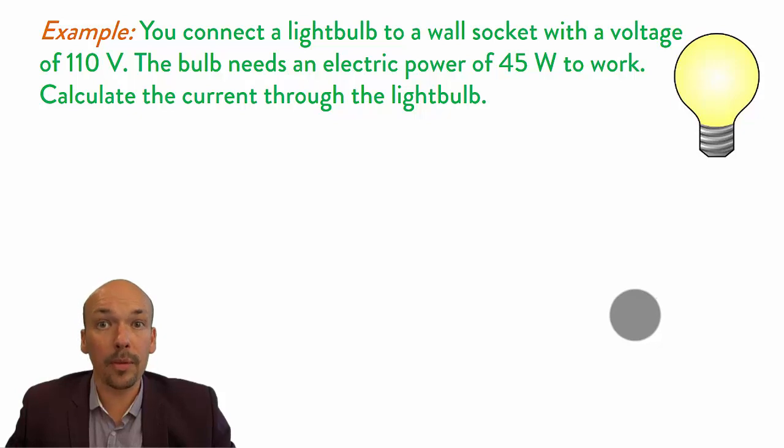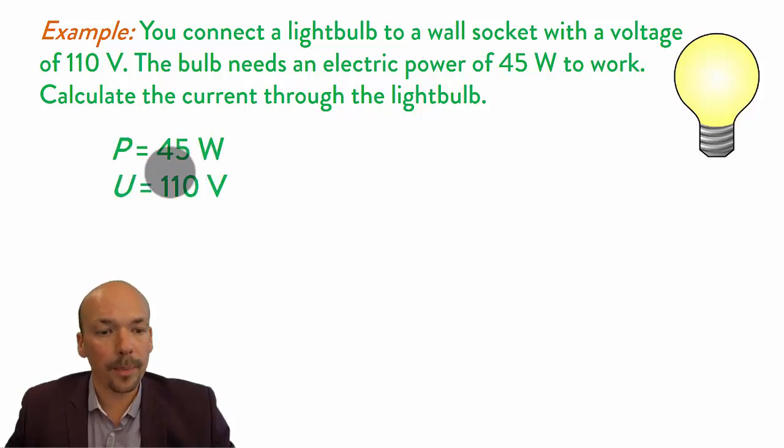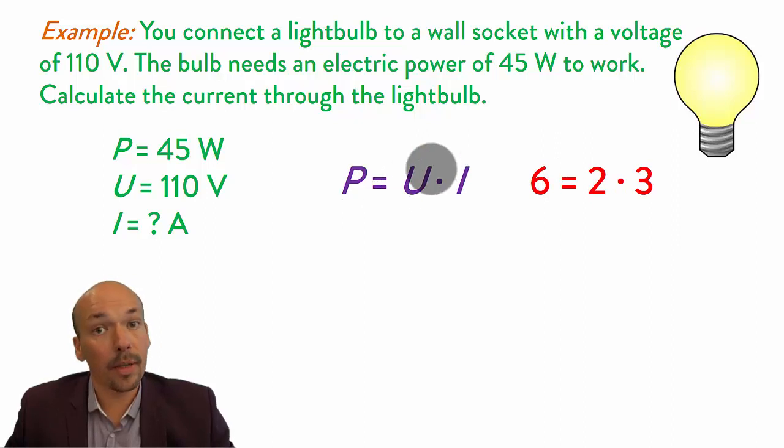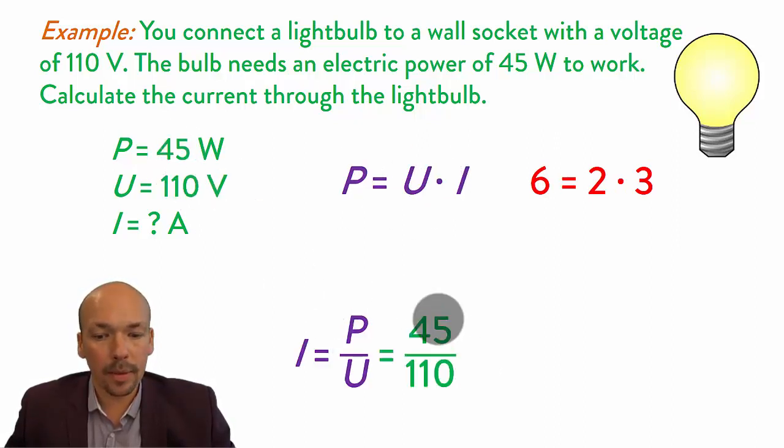Another example. You connect a light bulb to a wall socket with a voltage of 110 volts. The bulb needs an electrical power of 45 watts to work. Calculate the current through the light bulb. First we write down what's given: the power is 45 watts, the voltage is 110 volts, and we need to calculate the current I. This is the equation we always use, we have to rebuild it. I use 6 equals 2 times 3. We need to know the I, so 6 divided by 2, or P divided by U. We put it in the equation and get 0.41A.